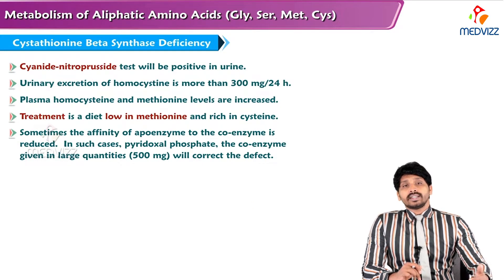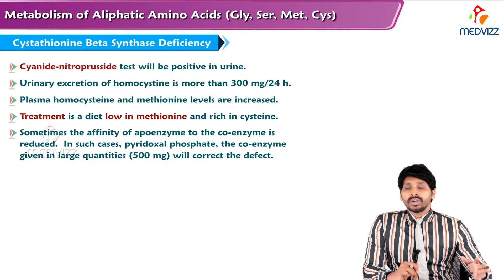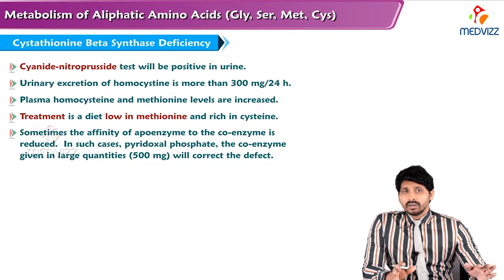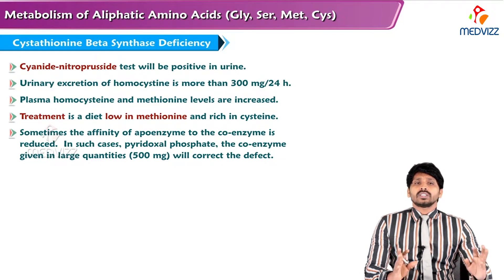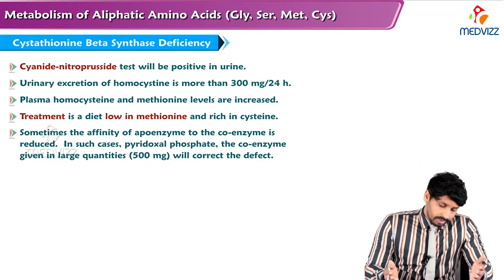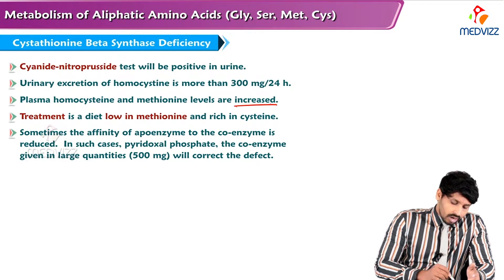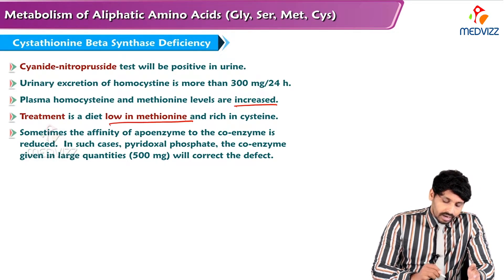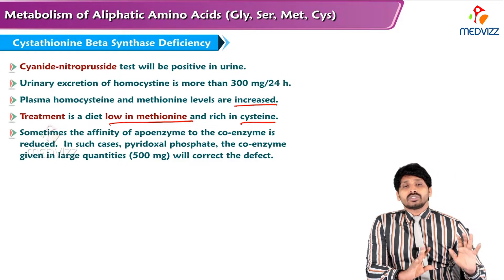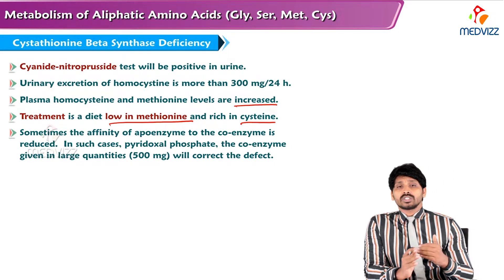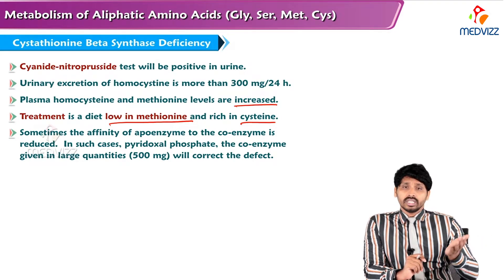The cyanide nitroprusside test is helpful in identifying cystathionine beta synthase deficiency. In this deficiency, the cyanide nitroprusside test will be positive. Urinary excretion of homocysteine is more than 300 milligrams per 24 hours of urine. Plasma homocysteine and methionine levels are increased. Treatment is a diet low in methionine and rich in cysteine. Sometimes the affinity of the apoenzyme to the coenzyme is reduced; in such cases, pyridoxal phosphate (PLP), the coenzyme, given in large quantities can correct this deficiency.